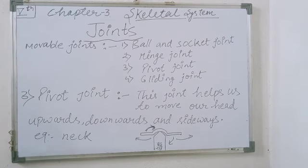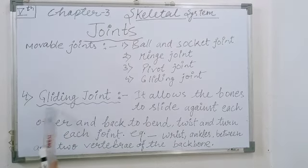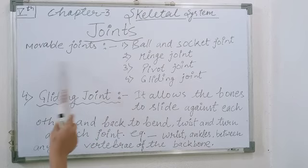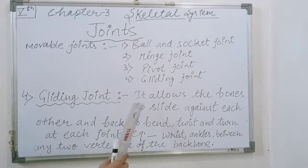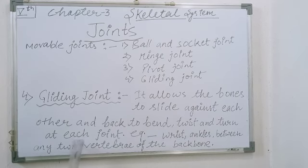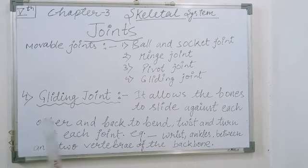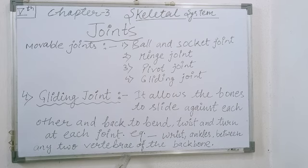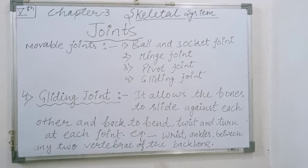The last type of movable joint is the gliding joint. It allows bones to slide against each other and helps to bend, twist, and turn at each joint. Gliding joints are found in the wrist, ankle, and between any two vertebrae. In the vertebral column, which has 33 bones, this type of joint is present between every two vertebrae.